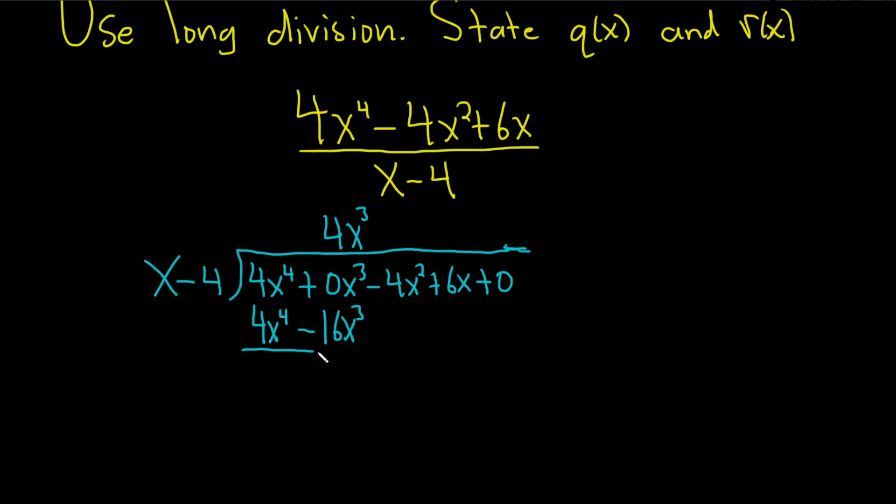Then you draw a line. And many people switch the signs. I don't like doing that. Instead, I put a parenthesis and a giant minus sign, and then I add. 4x to the fourth plus negative 4x to the fourth, right, it gets distributed, is 0. 0x cubed plus a positive, right, becomes positive 16x cubed, is 16x cubed. And then I bring down the next one, so I write an arrow, and I write minus 4x squared.